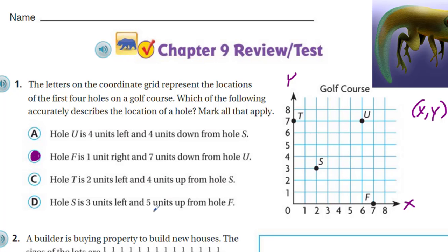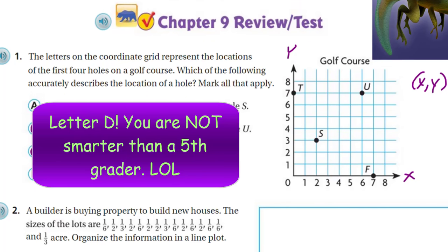For answer C: hole T is two units left and four units up from hole S. Is it two units left? One, two — yes. Is it four units up? One, two, three, four — it is! C is a winner. For answer D: hole S is three units left and five units up from hole F. S is to the left of hole F — is it three units? One, two, three — no, it's not. And it's not five units up either. So D does not work. We move on to the next problem.